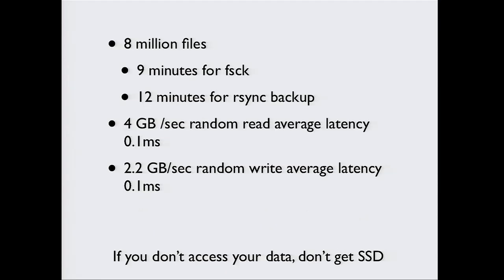At Wikia, on our file server with eight million files on an ext3 filesystem, a full backup went from nine minutes down to twelve — and you get 2.2 gigabytes per second of random writes. Random writes — you can do joins, you can do whatever you want. You get 50 terabytes of SSDs in one machine for about $80,000, and you can skip sharding unless you have more than 50 terabytes, which most of you don't need.